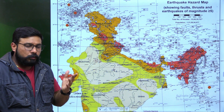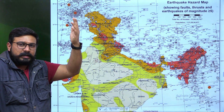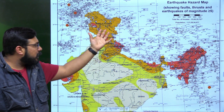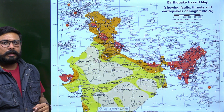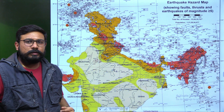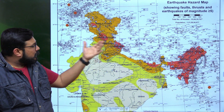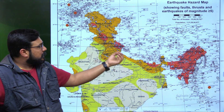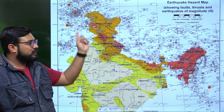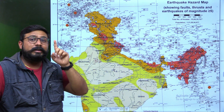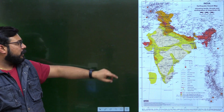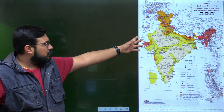A major earthquake — more than magnitude 7.8 or 7.9 — will trigger huge landslides, which can puncture these glacial lakes. Earthquakes are thus signalling an impending doom. This built-up stress constitutes the third natural factor that can trigger a breach of glaciated lakes.